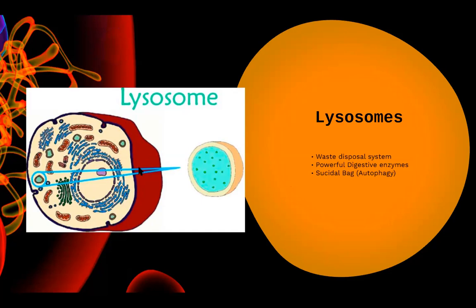So the lysosome is doing waste disposal for the whole cell. Think about it — inside the cell, this tiny organelle is leading to the death of the complete cell. So can we call it a suicidal bag? Yes, we can. The process of a cell organelle eating up the cell in which it resides is known as autophagy. That is why lysosomes are at times termed the suicidal bag of the cell.